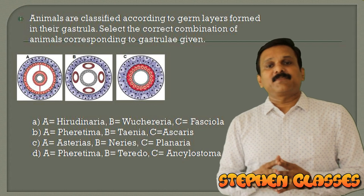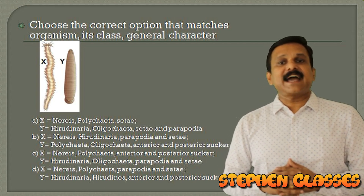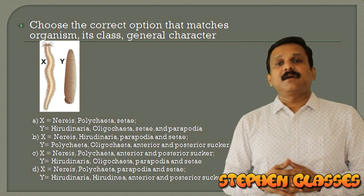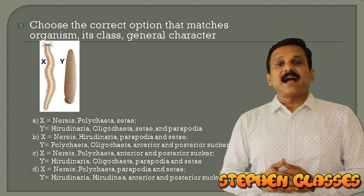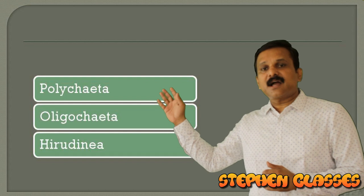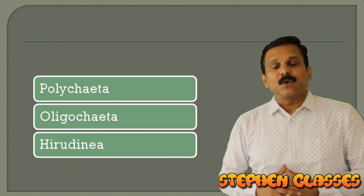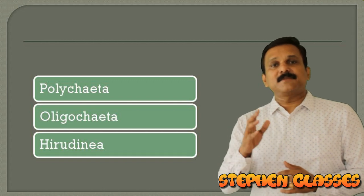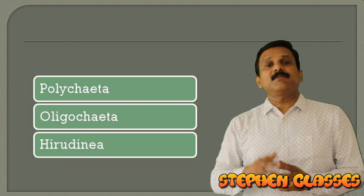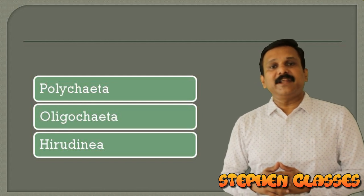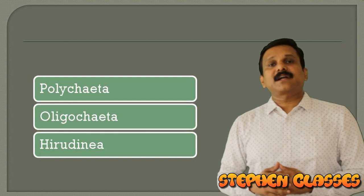Moving to the next question: choose the correct option that matches the organism to its class and general character. Two organisms are given — Nereis and a leech. Annelids are classified into three groups: Polychaeta (example: Nereis, having both setae and parapodia), Oligochaeta (having only setae, earthworms), and Hirudinea (example: leech, lacking setae or parapodia).